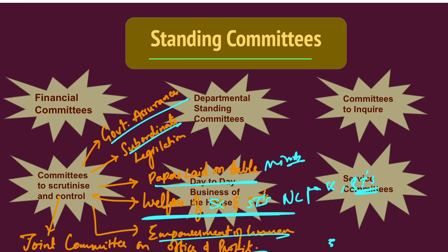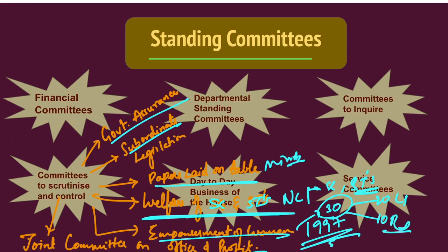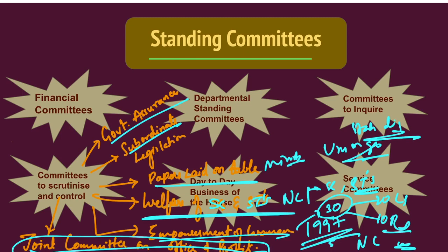The Committee on Empowerment of Women was constituted in 1997 and consists of 30 members — 20 from Lok Sabha and 10 from Rajya Sabha. It considers the report of the National Commission for Women and examines measures taken by the union government to secure status, dignity, and equality for women in all fields. The Joint Committee on the Office of Profit examines the composition and character of committees appointed by the central government, state governments, and union territory governments, and recommends whether persons holding these offices should be disqualified from being elected as members of parliament.